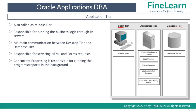There are two types of requests that are processed by the application tier. One is HTML-based applications such as JSP pages or OAF pages, and also forms requests. It is the responsibility of the middle tier to accept these requests, process them, and send back the required output to the end user.